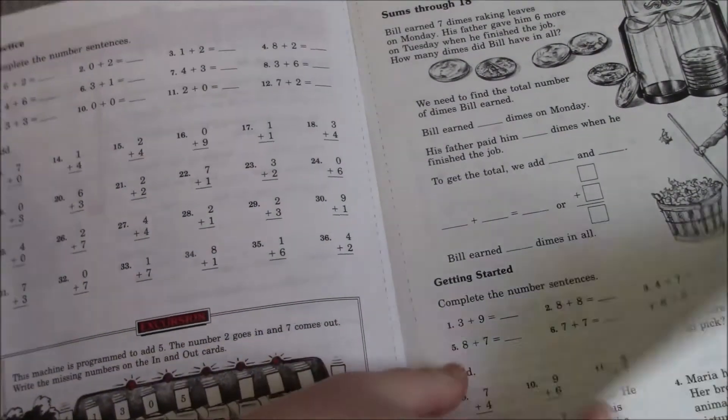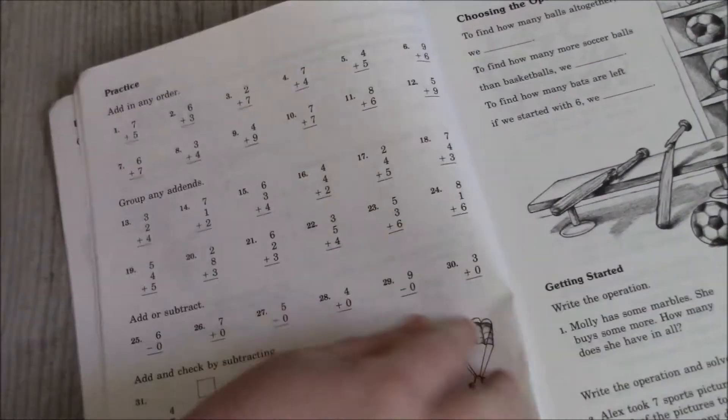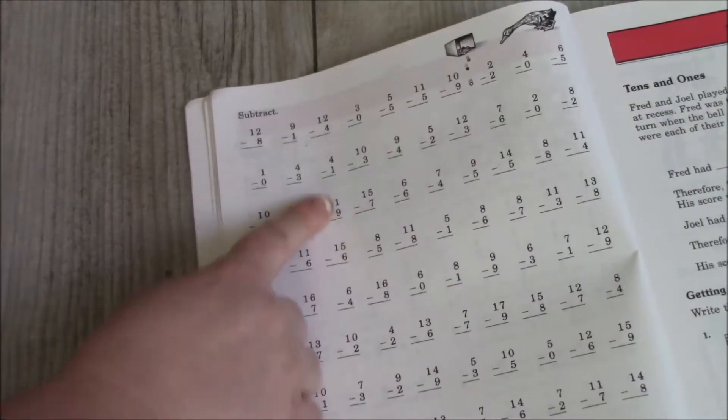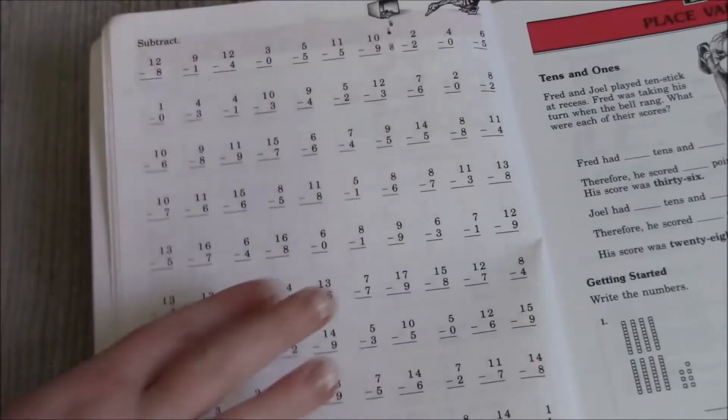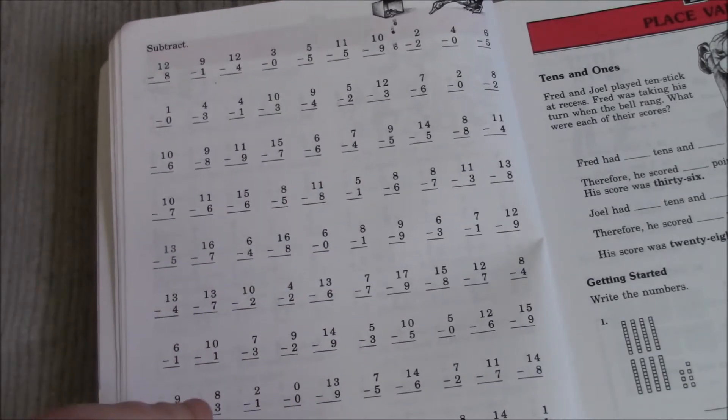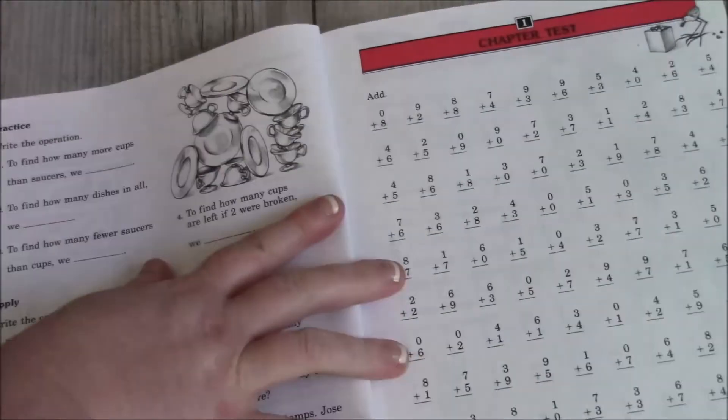So, again, we have a review. Lots of review. And then we start having these things, which these are what I use for timing. So, how quickly can you get these done? Time tests.